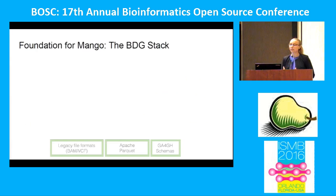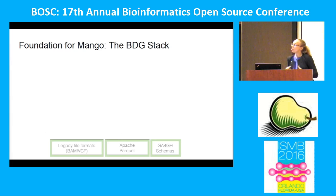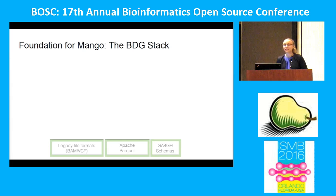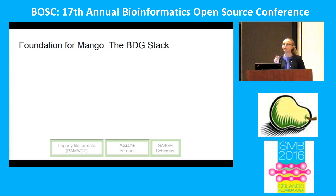There's been a lot of previous work at UC Berkeley and other institutions that have built a strong foundation for distributed visualization. At the lowest level, we need to store our data. We'd like to support legacy file formats like BAM, VCF, and BED, but we can optimize those datasets further for a distributed environment using Apache Parquet. This allows us to distribute alignment and variant data across a cluster, and also to select very fine regions without reading all data from disk.